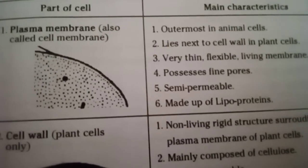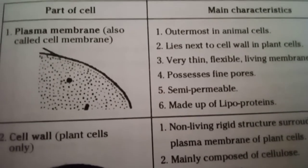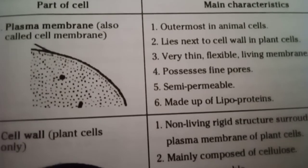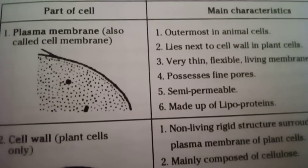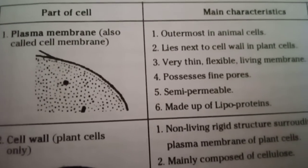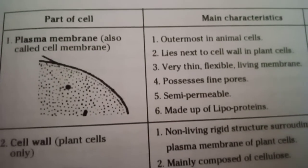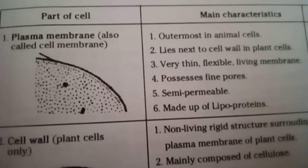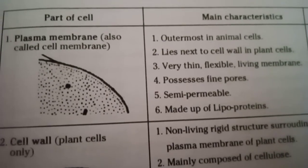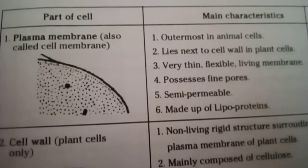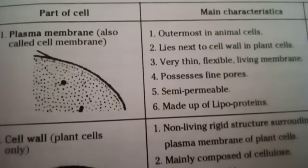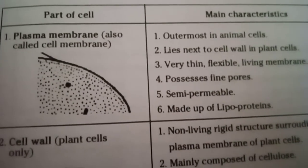We will discuss each and every part in further classes. The non-living parts are granules, vacuoles, and fat droplets. In the nucleus — the center part of the cell — there is nuclear membrane, nucleolus, and chromatin fibers.